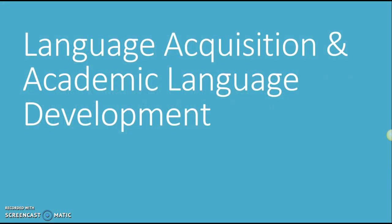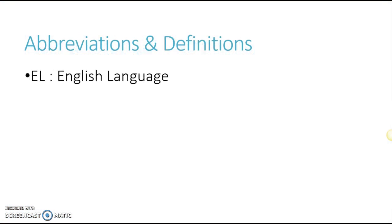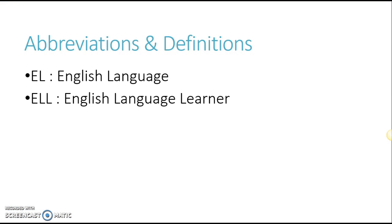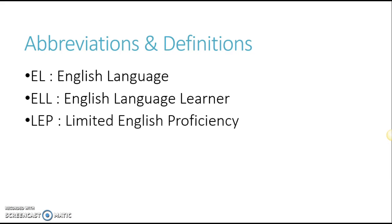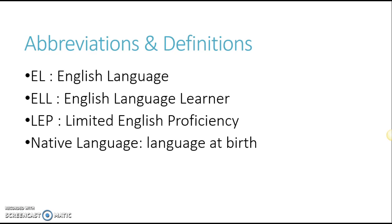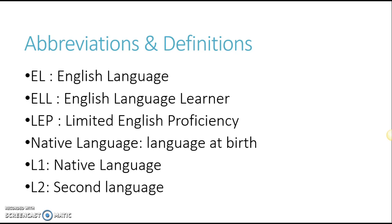EL stands for English language. ELL is an English language learner. LEP is a student with limited English proficiency. The native language is the one that the family spoke when they were born. L1 is that native language, and L2 is the second language. For most of our students, the native language is going to be Russian or Spanish most of the time, and then the second language, obviously, is typically going to be English.